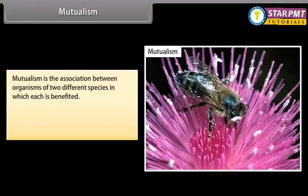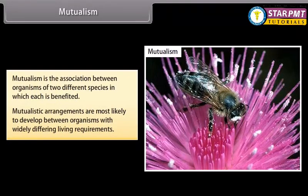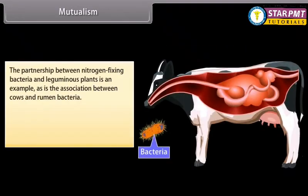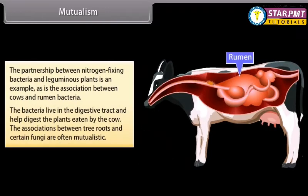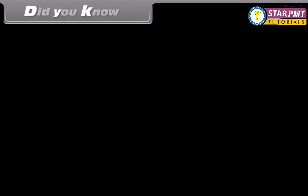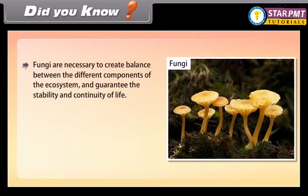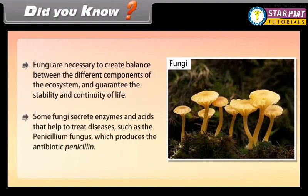Mutualism is a relationship between two organisms of two different species in which each is benefited. Mutualistic arrangements are most likely to develop between organisms with widely differing living requirements. The partnership between nitrogen-fixing bacteria and leguminous plants is an example, as is the association between cows and rumen bacteria — the bacteria live in the digestive tract and help digest the plants eaten by the cow. The associations between tree roots and certain fungi are often mutualistic. Fungi are also necessary to create balance between different components of the ecosystem. Some fungi secrete enzymes and acids that help treat diseases, such as the penicillium fungus which produces the antibiotic penicillin.